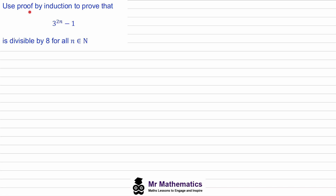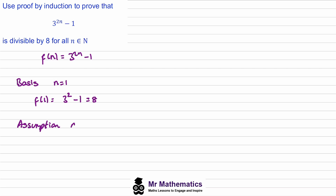Now let's say f of n equals three to the power of two n, minus one, and we want to show this is divisible by eight for all values of n in the natural numbers. For the basis step, letting n equal one, f of one equals three to the two minus one, which is three squared minus one, giving nine minus one equals eight. This is clearly divisible by eight. For our assumption where n equals k, substituting k we get f of k equals three to the two k minus one, and we assume this is divisible by eight.